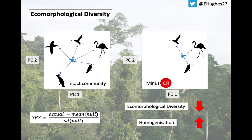Species are more similar to each other in terms of their traits. We use the standard effect size to see whether communities are more or less homogenised than expected. This is simply the actual mean distance to centroid minus the mean of 1,000 simulated communities with the same number of species lost — in the above example, this would be two species. This is then divided by the standard deviation of these null communities. A positive SESS indicates that a community is more ecomorphologically diverse than expected, and a negative SESS indicates homogenisation.